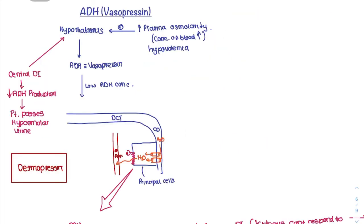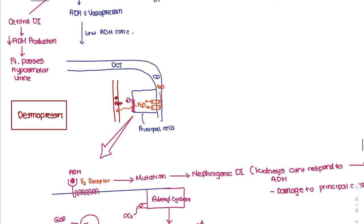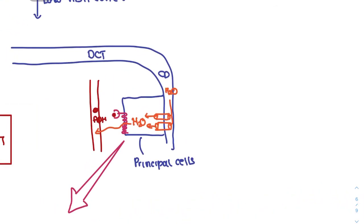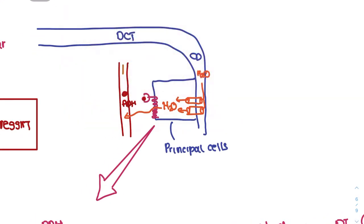ADH, also called vasopressin, is released when blood concentration increases — that is, when there is less water relative to solutes. ADH acts on V2 receptors on principal cells in the distal convoluted tubule and collecting duct of nephrons. ADH causes aquaporin channels to be added to the membrane, allowing water to rush in. If these channels are absent, water passes out and excess water released causes hypo-osmolar urine.